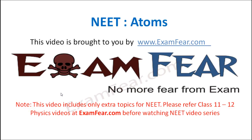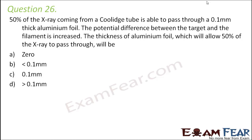Hello friends, this video on atoms is brought to you by examfear.com — no more fear from exams. Question number 26: 50% of the X-ray coming from a Coolidge tube is able to pass through a 0.1 millimeter thick aluminum foil. The potential difference between the target and the filament is increased.